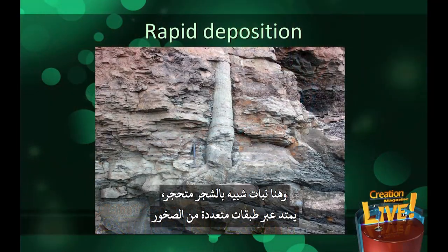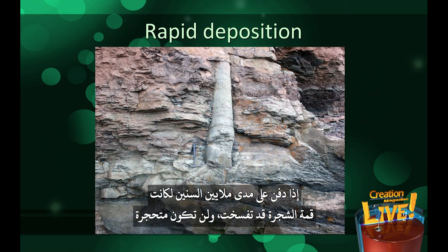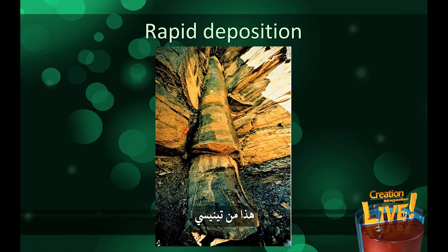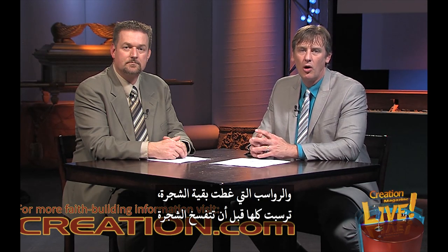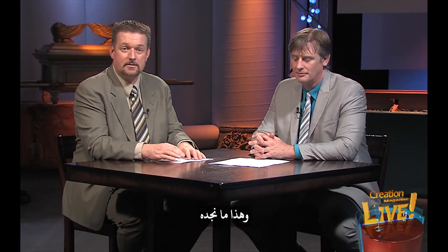Here's a fossilized tree-like plant extending through multiple layers of rock. Obviously the entire thing must have been buried rapidly — if it was buried over millions of years, the top of the tree would have rotted and wouldn't have been fossilized. Here's another picture of a fossilized tree extending through multiple layers of rock, with the base of the tree in a coal seam, from Tennessee. This is evidence that the tree, the material that has since turned to coal, and the sediment were all deposited before the tree rotted. And if there was a global flood, this is exactly the kind of thing we would expect to find.